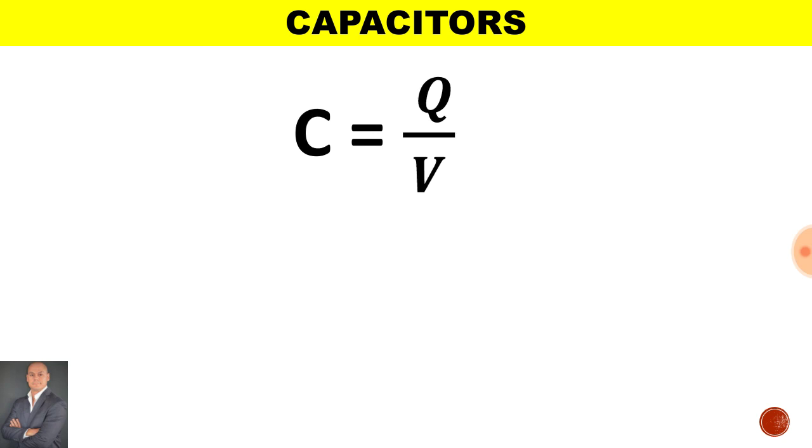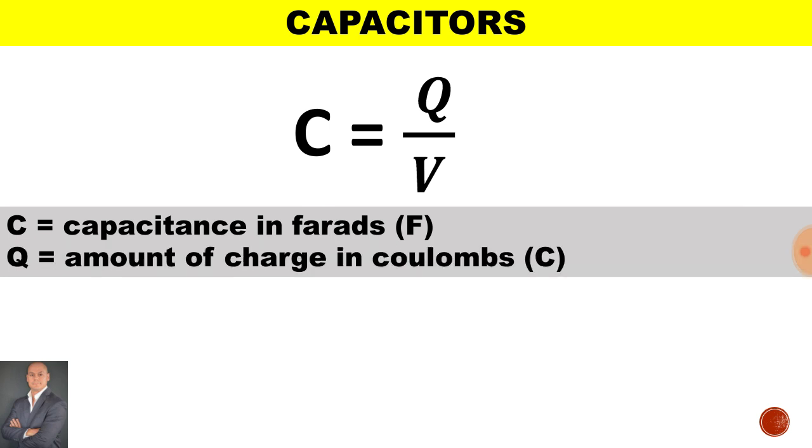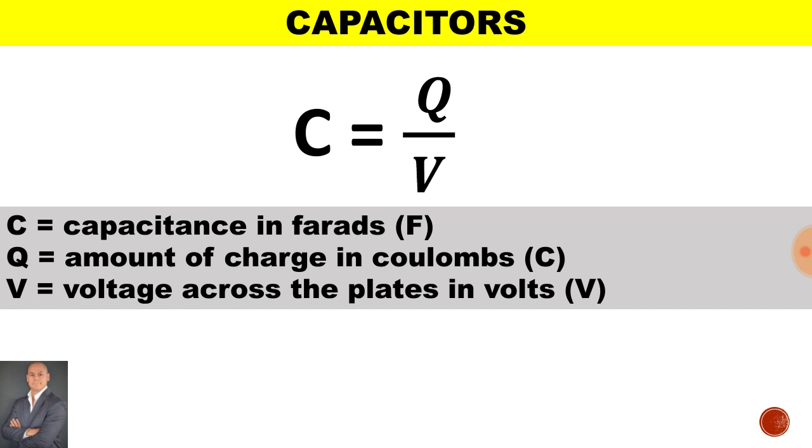Looking at this formula and the function of each component in the formula, C is the capacitance in farads, Q is the amount of charge in coulombs, and V is the voltage across the plates in volts.